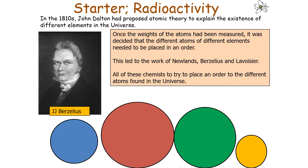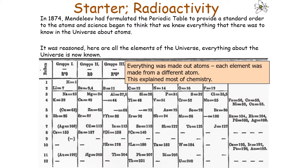Once the weights of the atoms had been measured, it was decided that the atoms of different elements needed to be placed in an order. This led to the work of Newlands, Berzelius and Lavoisier, all of whom were chemists who tried to place an order to the different atoms found in the universe. But in 1874, Dmitri Mendeleev formulated the periodic table to provide a standard order to the atoms, and therefore science began to think we knew everything there was to know about atoms in the universe.